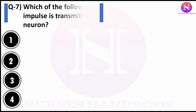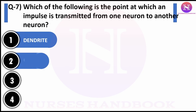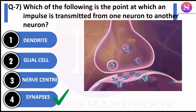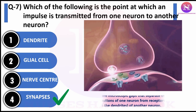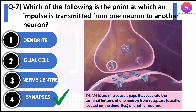Question number seven: which of the following is the point at which an impulse is transmitted from one neuron to another neuron? Option one: dendrite, option two: glial cells, option three: nerve center, option four: synapse. The correct answer is synapse. Synapses are microscopic gaps that separate the terminal button of one neuron from the receptor of another neuron.